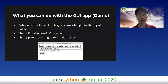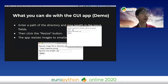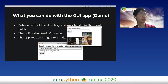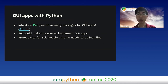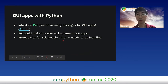Here's a demo of the converted GUI app. You enter the target directory, set max length to smaller, click resize, and the resized images are displayed. There are several packages to build GUI apps, but I'd like to introduce Eel. Eel could make it easier to implement GUI apps. Note that to use the Eel package, Google Chrome needs to be installed on your PC.